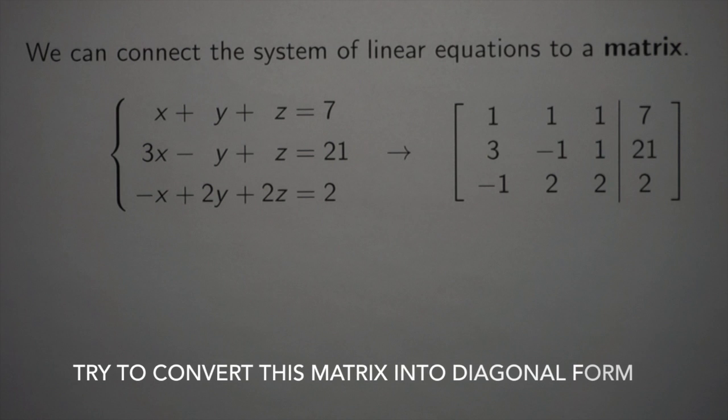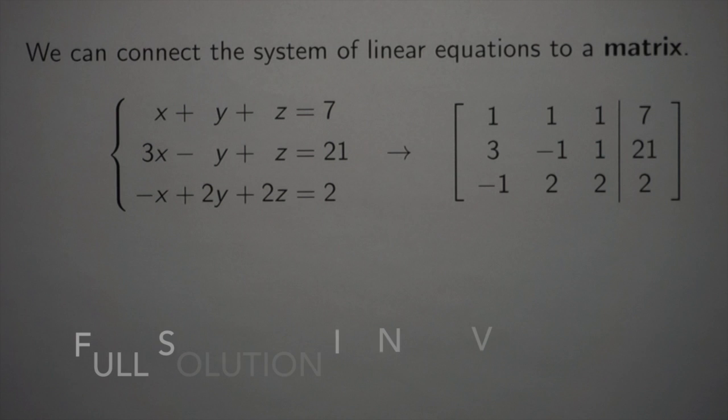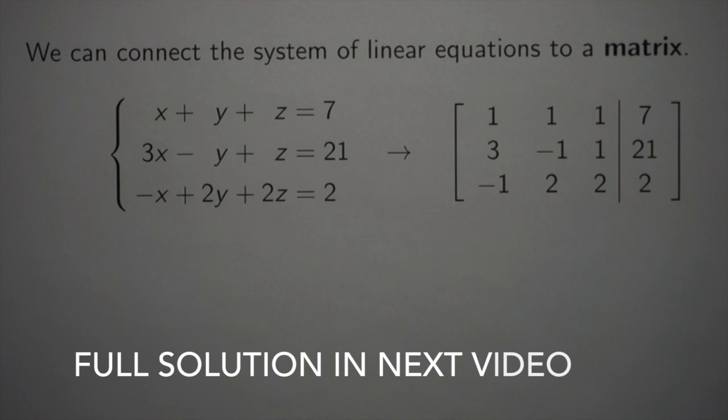So, try to convert this matrix into diagonal form. Use the actions that we had, all three of them, and try to get this so that you have nothing but 1s down the middle, and 0s everywhere else. I'm going to post the full solution in the next video, so try it on your own, and then go to there and take a look. Make sure that what you're doing makes sense in terms of the system that we have.